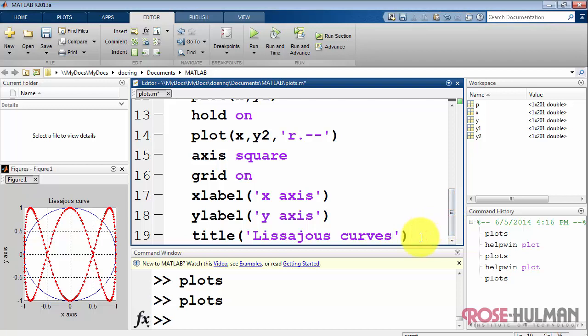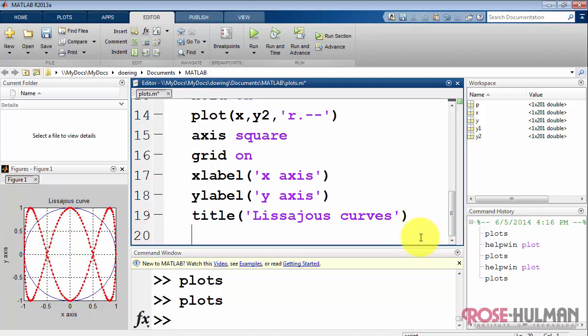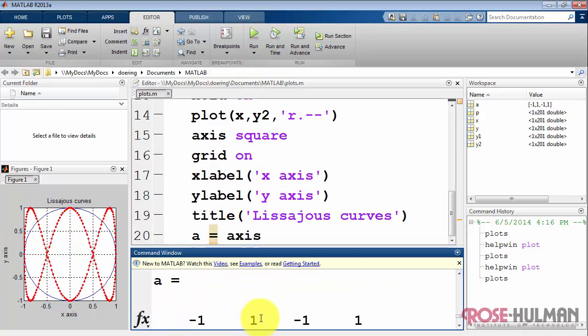Let me adjust the title while I'm thinking about that. Alright, next I'd like to show you how you can control the axis limits. For example, right now the x-axis runs between minus 1 and plus 1. And the same thing for the y-axis. Now I'm going to call the axis function and save its output to variable a.